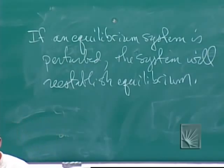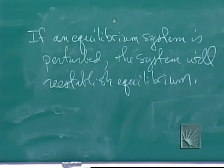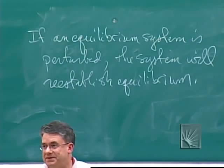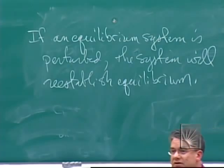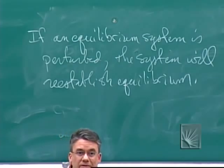Le Chatelier's principle says, if you've got a system at equilibrium, a system being a chemical reaction, and you perturb that equilibrium in some way, the system will do everything in its power to reestablish equilibrium. Because it wants to be at equilibrium. So what does that mean? If you've got a chemical reaction that is set up so that the rate of the forward reaction is equal to the rate of the reverse reaction, so you've set up an equilibrium, and I were to change it in some way. So in this reaction, say I had this one sitting at equilibrium, and I dump in more nitrogen. What's going to happen when I dump in more nitrogen? There's more stuff to react, so I'm going to make more products. I've upset the equilibrium.